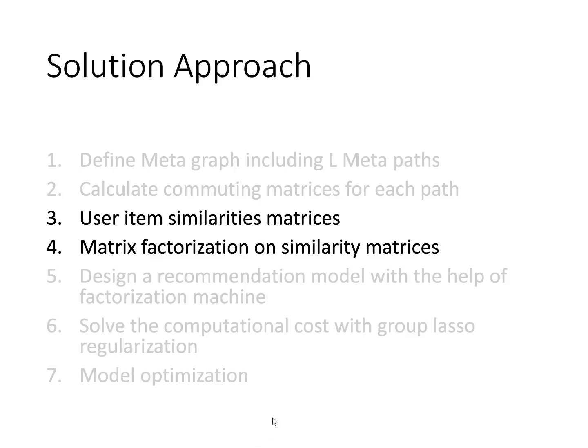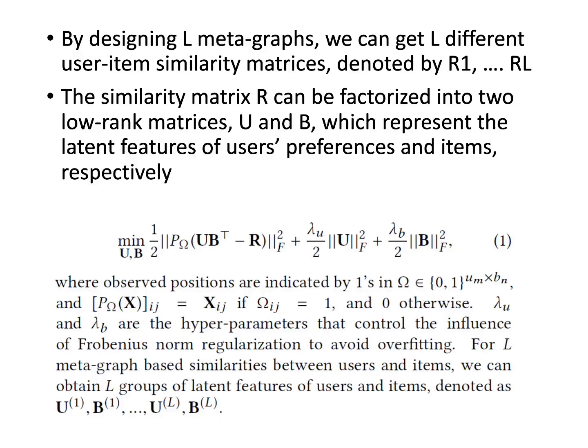Steps three and four involve user similarity matrices and matrix factorization on the similarity matrix. They design l metagraphs, obtaining l different user-item similarity matrices denoted R_1 through R_l. Each similarity matrix R can be factorized into two low-rank matrices U and V, representing the latent features of user preferences and items. This yields l groups of latent features denoted as (U_1, V_1) through (U_l, V_l).